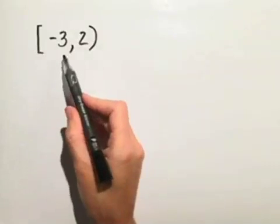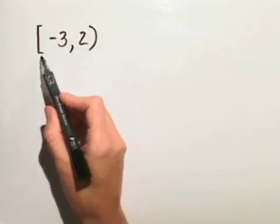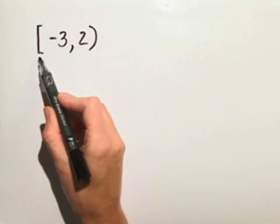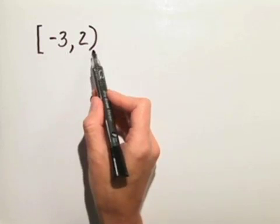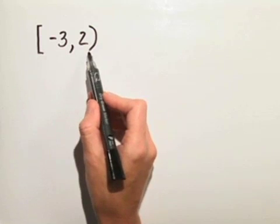We have the interval from negative 3 to 2, and notice the bracket on the side by negative 3 means that the number negative 3 is included in our interval. However, the parentheses by the 2 indicates that 2 is not included on our interval.